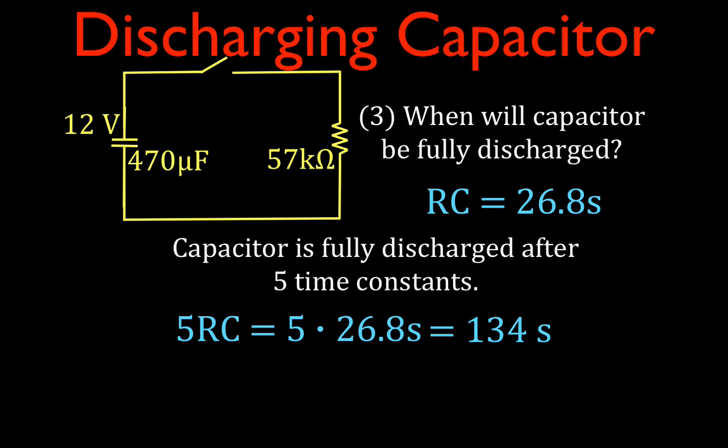So there you go. We did all three of those things: the voltage after one time constant, the voltage across the capacitor after 20 seconds, and the time it takes to fully discharge the capacitor through the 57k ohm resistor.